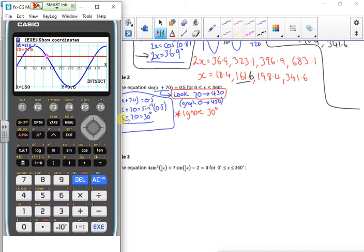The next one's 150, so my x plus 70 is 150, and my x plus 70 is 390. Then I'll take the 70 off it and I've got 80 degrees and 320 degrees. Those are my final answers. My final answers are lying between 0 and 360.